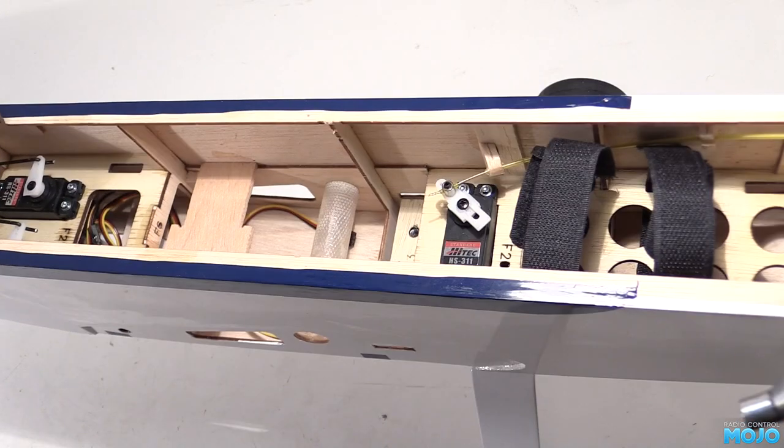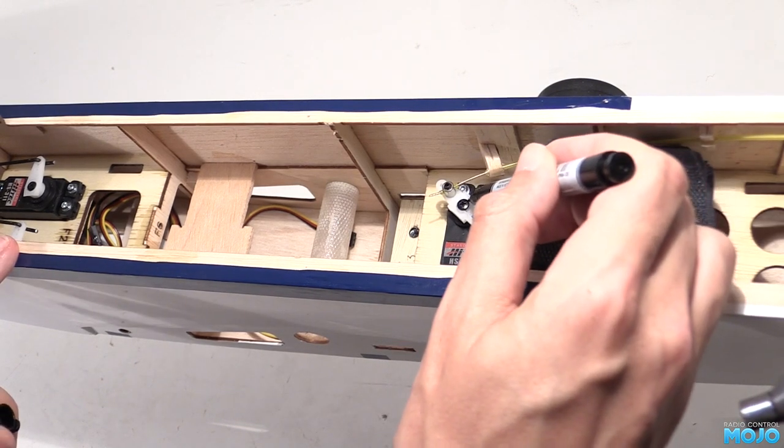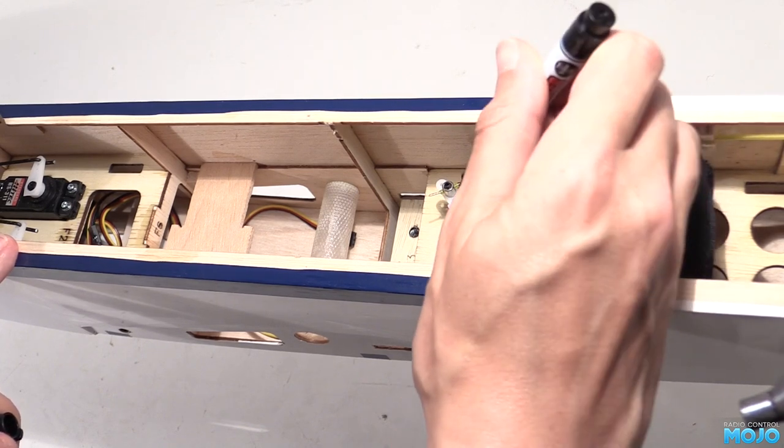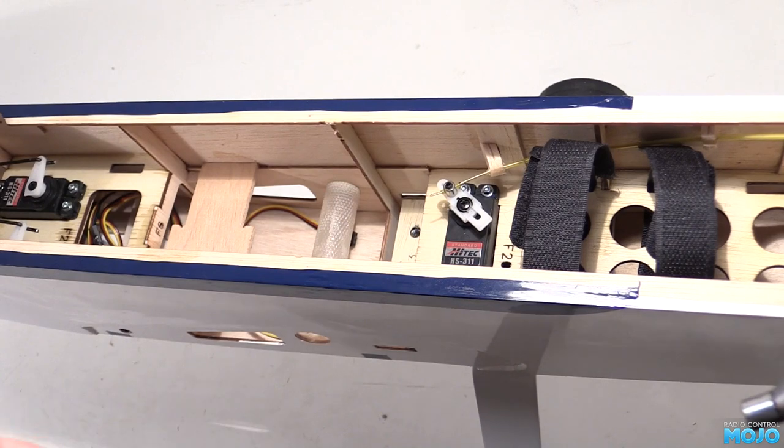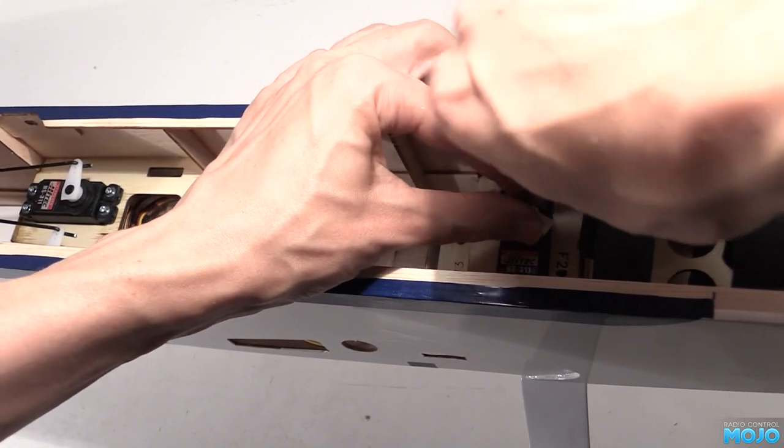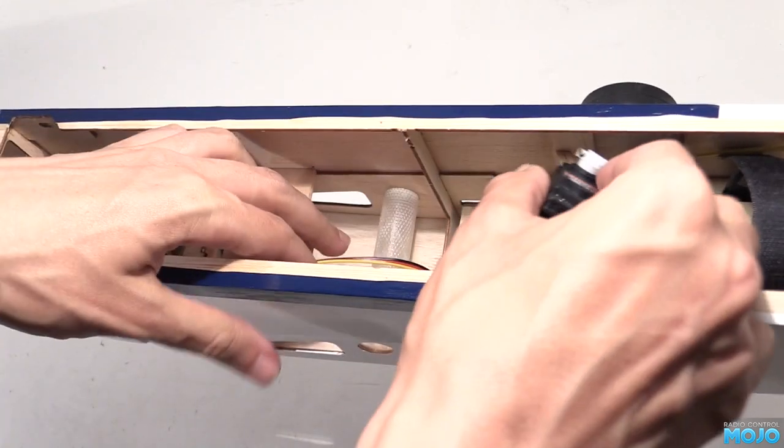There's some slots cut into the formers for the battery to pass through. But to get them the throttle servo needs to come out too. We don't really want to have to reset all the linkages. So we can mark the arm position with a pen. Just draw around the screw. The base of the adjustable arm will keep the angle. When it all goes back in we just line up the marks.